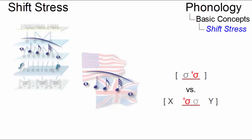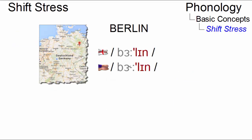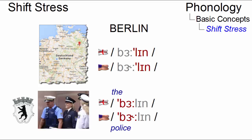There are many words that have different stress patterns when they are pronounced in isolation or within larger constituents. For example, the German capital is pronounced Berlin. However, as part of a larger construction, stress shifts to the first syllable, as in the Berlin police. This suprasegmental phenomenon of present-day English is referred to as shift stress.